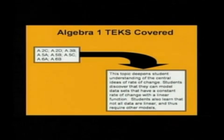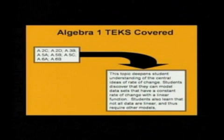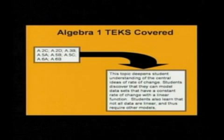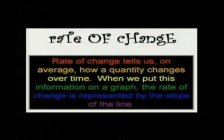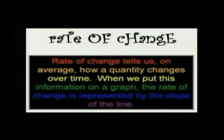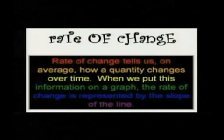This topic deepens student understanding of the central ideas of rate of change. Students discover that they can model data sets that have a constant rate of change with a linear function. Students also learn that not all data are linear and thus require other models. Rate of change tells us, on average, how a quantity changes over time. When we put this information on a graph, the rate of change is represented by the slope of a line.